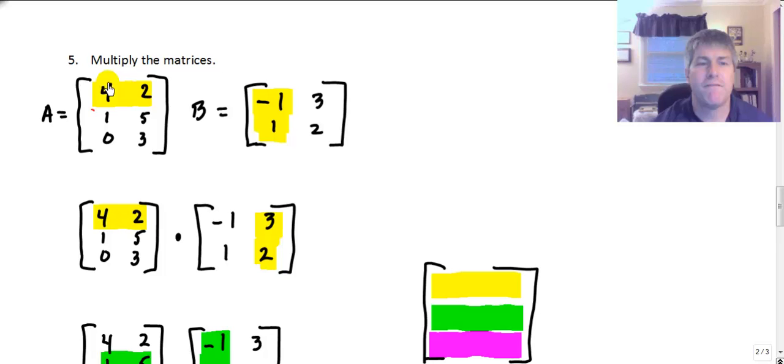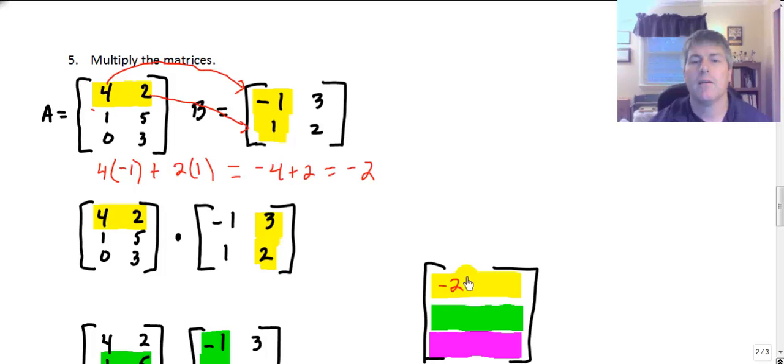So we're going to start, I'm going to multiply 4 by negative 1 and then 2 by 1 and we're going to add those together. So 4 times negative 1 plus 2 times 1. And that's going to be our first element in our new matrix. So that will equal negative 4 plus 2, which is equal to negative 2. So that goes in my first location, row 1, column 1.